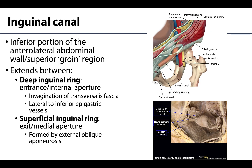The inguinal canal is in the general inguinal region, that inferior portion of the anterolateral abdominal wall, often referred to as the superior groin region. The inguinal canal is an actual structure, often referred to as a natural pathway within the inguinal region. It generally is collapsed except for the contents within. It extends between two naturally occurring openings or apertures. The first, or entrance, or internal aperture, is the deep inguinal ring, which is formed by an invagination of the transversalis fascia.